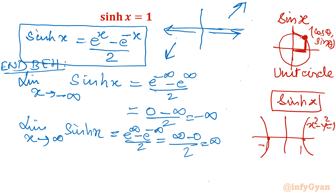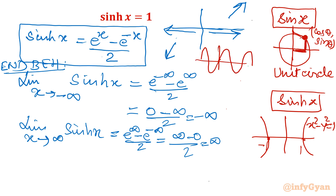One more difference: the sine function will oscillate on the x-axis — if you remember that graph, it oscillates. But the hyperbolic function won't oscillate. So this is our general formula and we can now draw the graph.